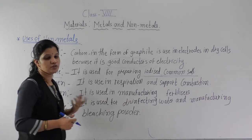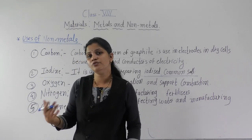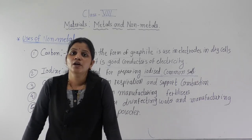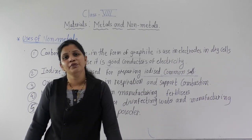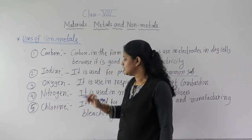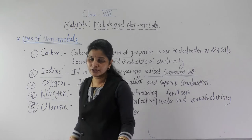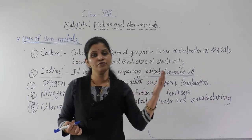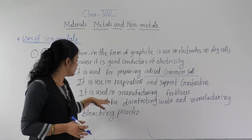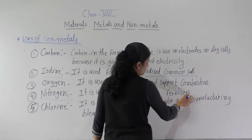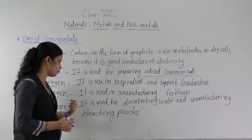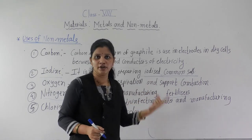The next one is oxygen. Oxygen is very important — it is used for the respiration process. Most all living things need oxygen for respiration. Without oxygen, we cannot live, so that is the most important use of oxygen. Then nitrogen — atmospheric nitrogen, we are not using it directly. Nitrogen is used in manufacturing fertilizers.